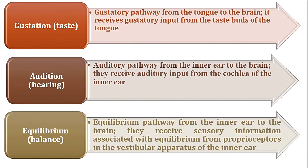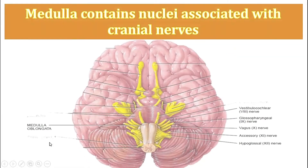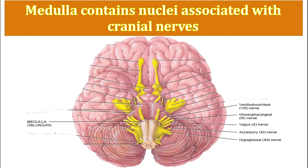Nuclei for sensory pathways like taste, hearing, and balance are also present in medulla. Lastly, medulla has nuclei for cranial nerve numbers 8, 9, 10, 11, and 12.